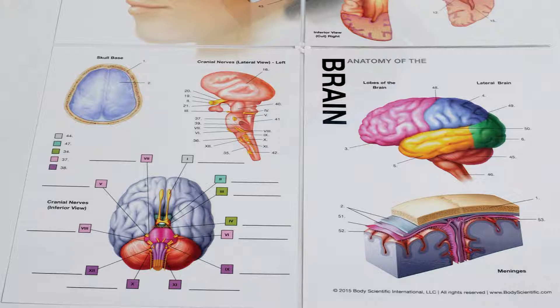One side identifies all the different structures while the other side only has numbers so it can be used for student assessments.